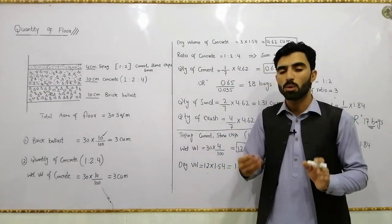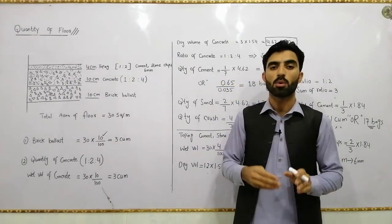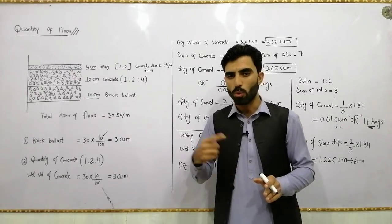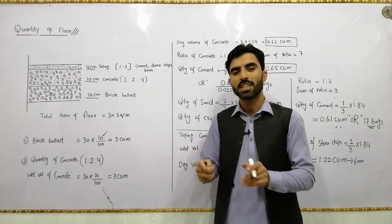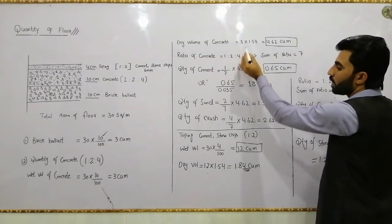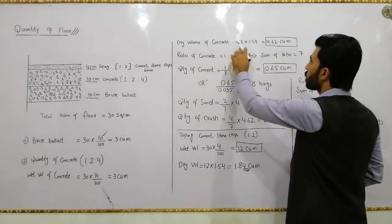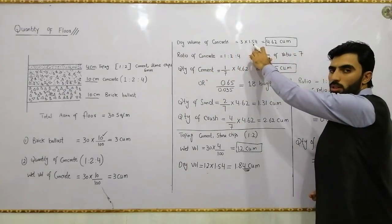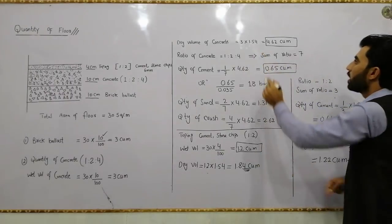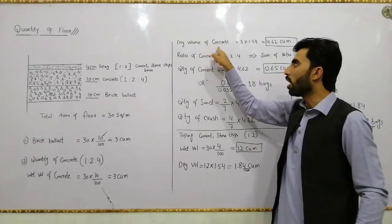As discussed in the previous video, to convert wet volume to dry volume, the volume increases by 54 percent. So dry volume of concrete = 3 × 1.54 = 4.62 cubic meters. In this dry volume we will find the quantity of cement, sand, and crush for this layer.